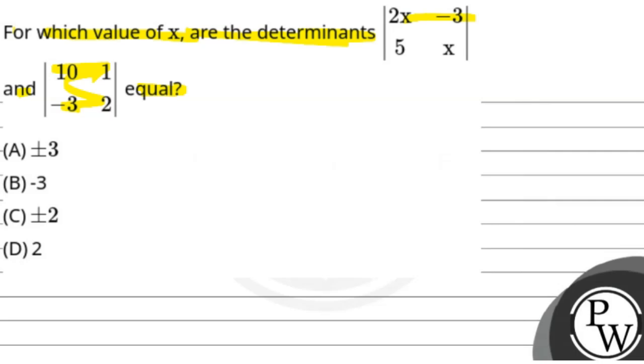That means x equals plus or minus 2. So option C is correct: x equals plus or minus 2. Hope you understood this question. Thank you so much.